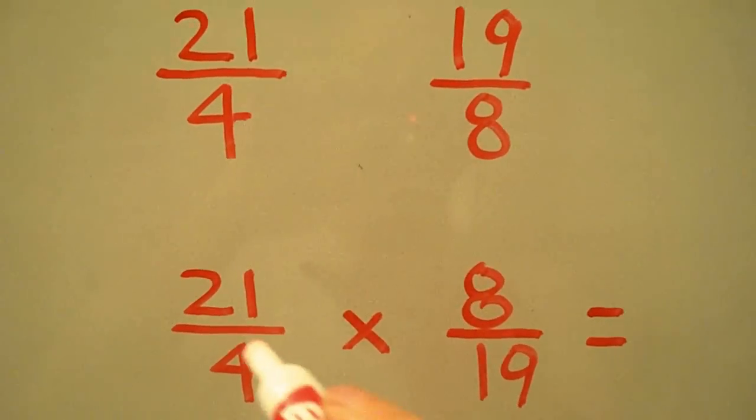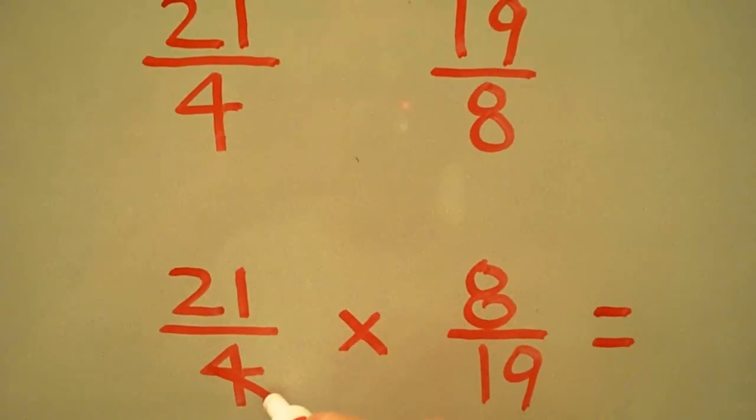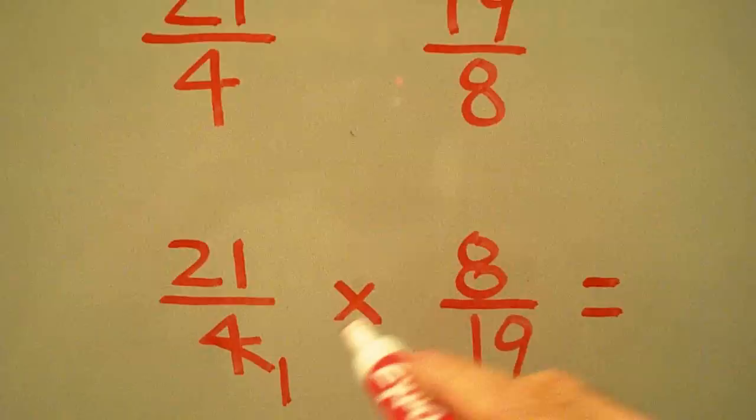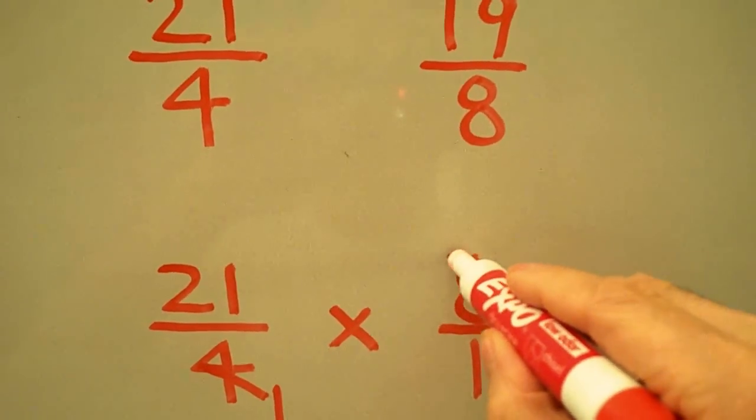We check to see if we can cross cancel, and in fact we can. 4 goes into itself once, 4 goes into 8 two times.